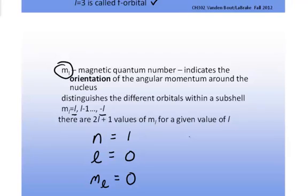Whereas, if the value for N is equal to 2, then the value for L can be 0 up to N minus 1, which would be 2 minus 1 is 1. And then, the value of M sub L is going to be dependent on each of those values of L.